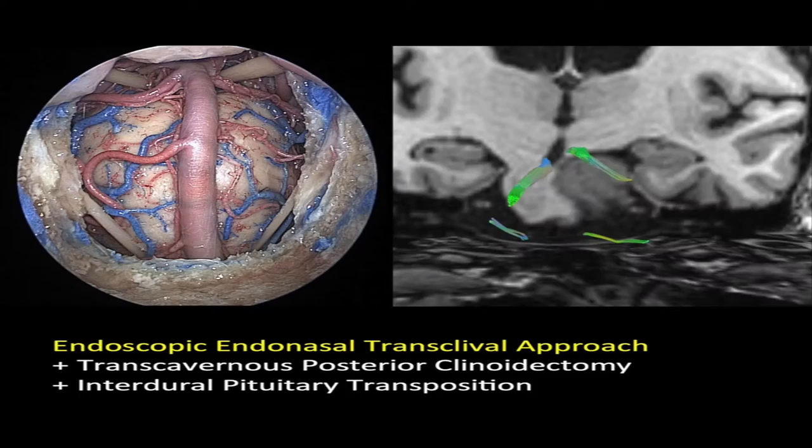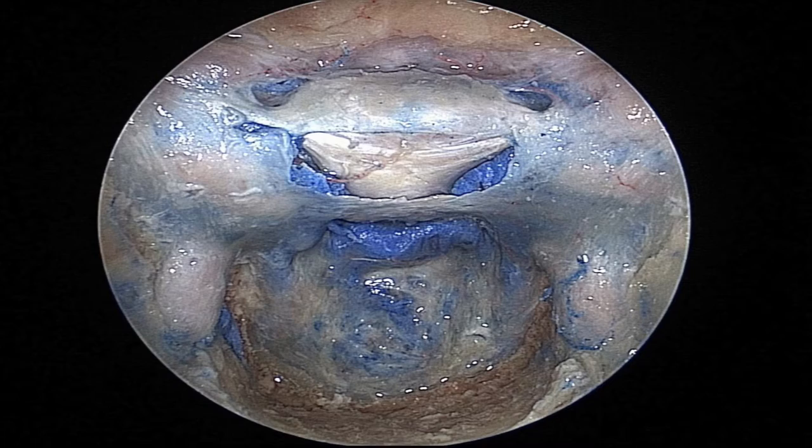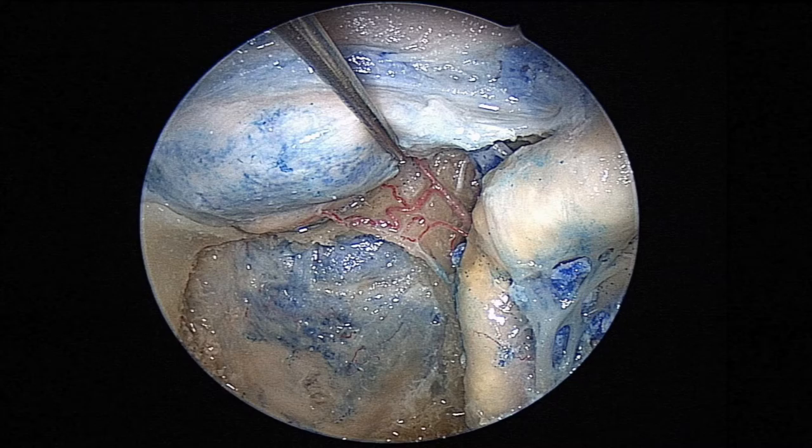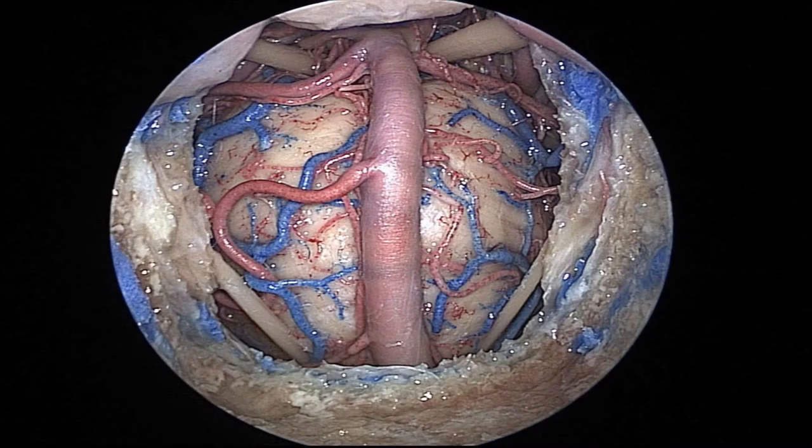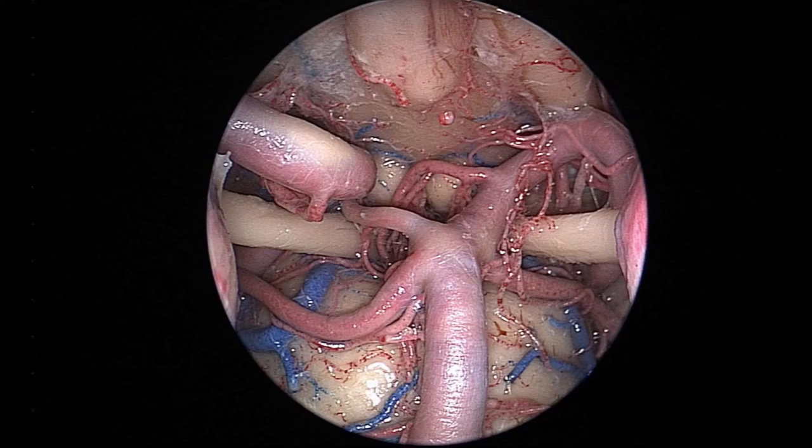The plan is to do a transcavernous posterior clinoidectomy, for which we need to understand the two layers of the cavernous sinus, because we open the anterior wall while we displace the medial wall, identify the superior hypophyseal artery, remove the posterior clinoid, and this gives us access to the lateral recess of the interpeduncular system. We find the basilar bifurcation and laterally the oculomotor nerve.